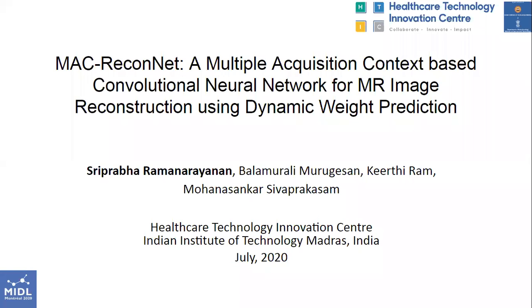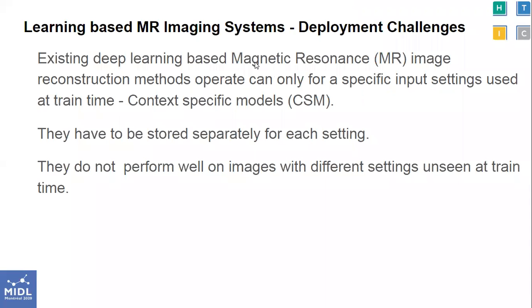Welcome to the talk on MacReconNet. Existing deep learning based magnetic resonance image reconstruction methods can operate only for specific input settings used at train time. These are context-specific models that have to be stored separately for each setting, and they do not perform well on images with different settings unseen at train time.